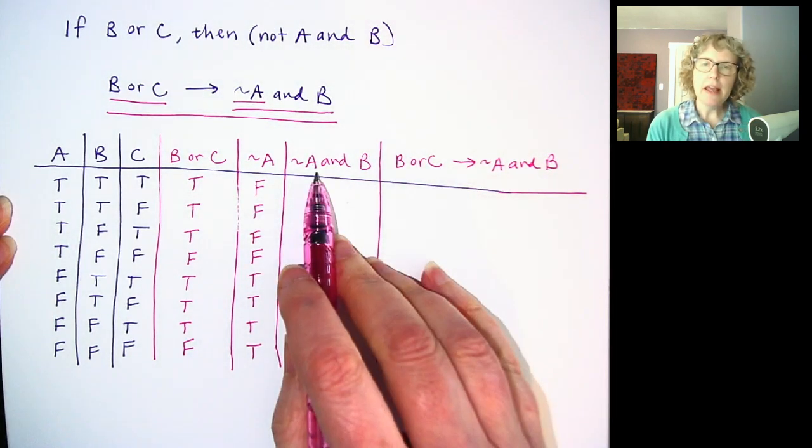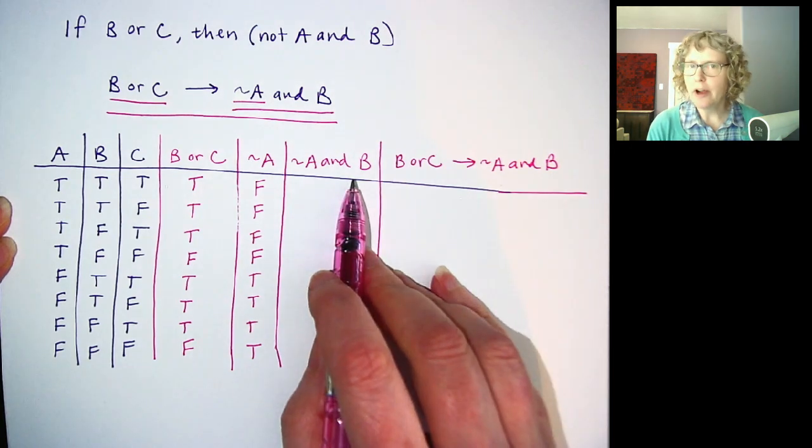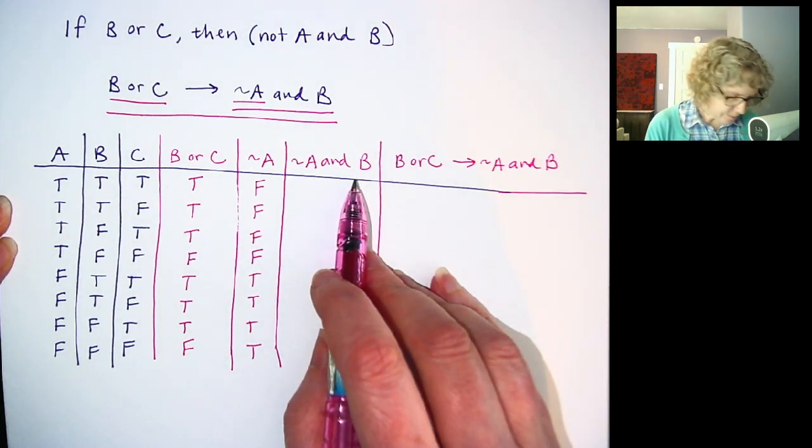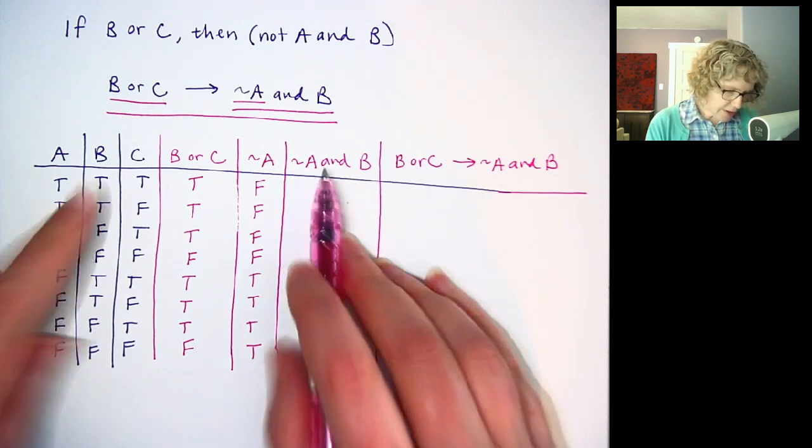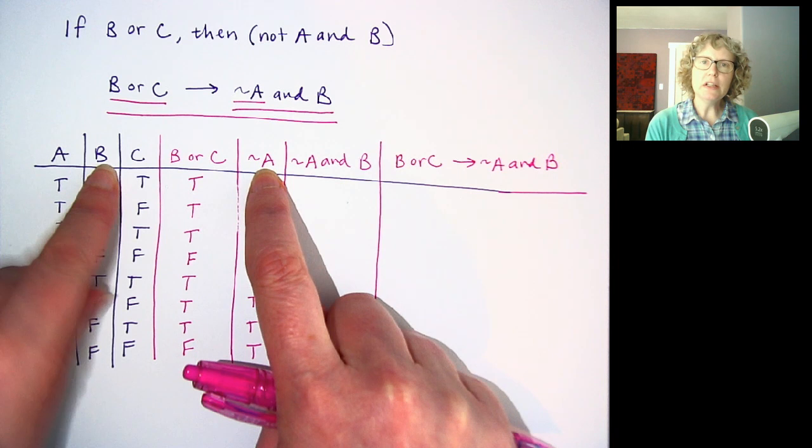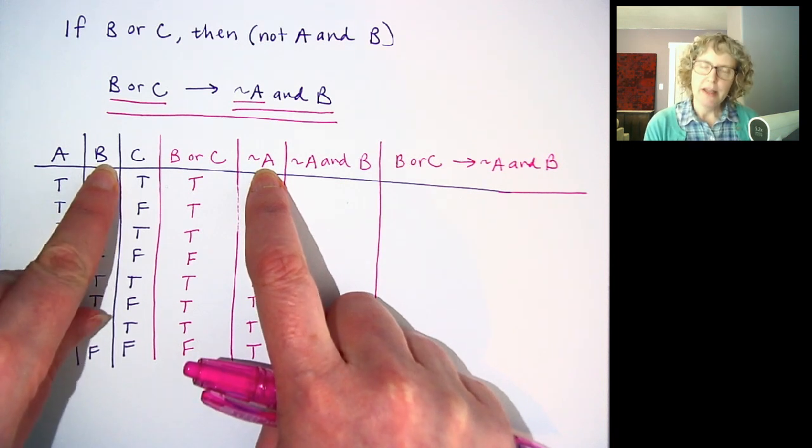Now I need not A and B. And by the way, if you want to try the rest of this, feel free to pause it and then check your answer. So now I'm going to look at the not A and the B column. I'm only going to look at those two columns.